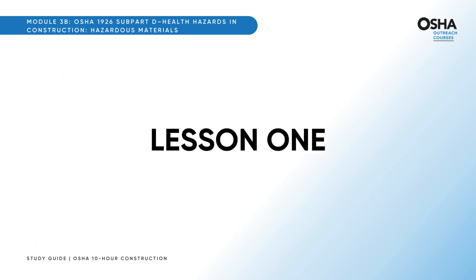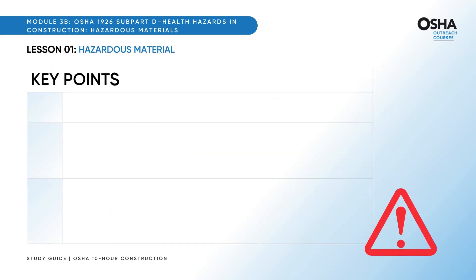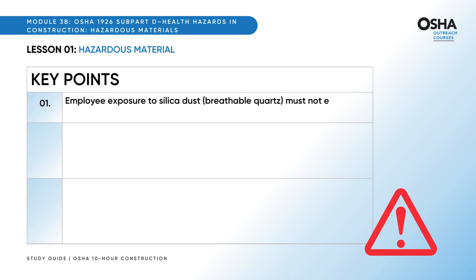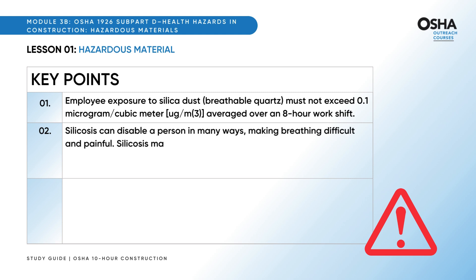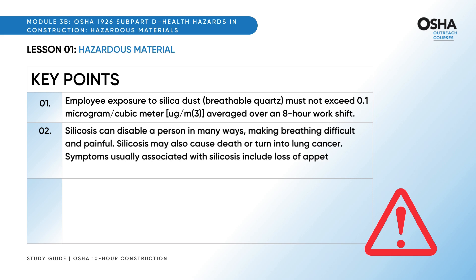Let's start the lesson about hazardous materials. The key points are: Employee exposure to silica dust (breathable quartz) must not exceed 0.1 microgram per cubic meter averaged over an 8-hour work shift. Silicosis can disable a person in many ways, making breathing difficult and painful. Silicosis may also cause death or turn into lung cancer. Symptoms usually associated with silicosis include loss of appetite, fevers, and body weight loss.